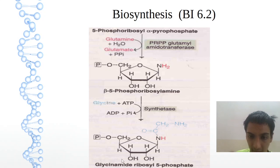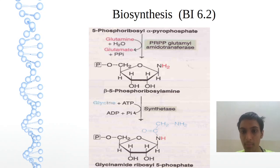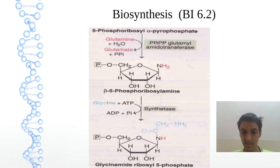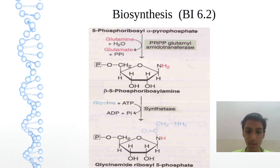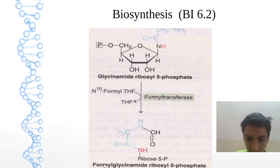Glycinamide will be attached to it. So glycinamide ribosyl 5-phosphate. From now onwards, ribosyl 5-phosphate will be common — just remember this. R5P, ribosyl 5-phosphate, will be common from now onwards. Then formyl group is added.